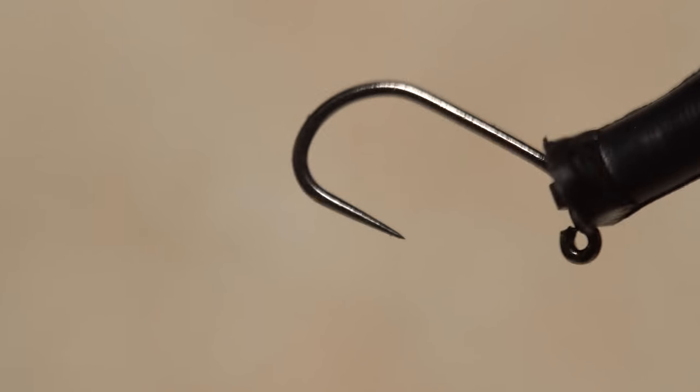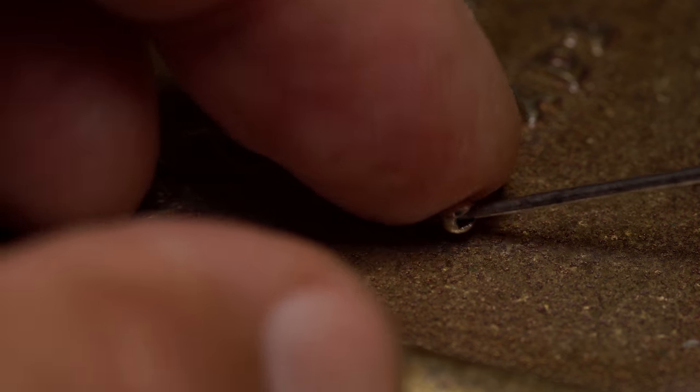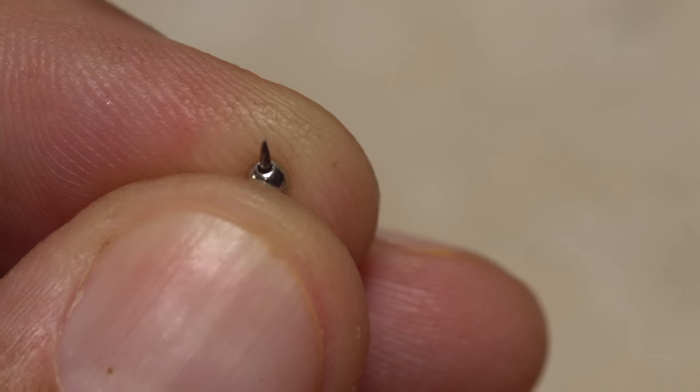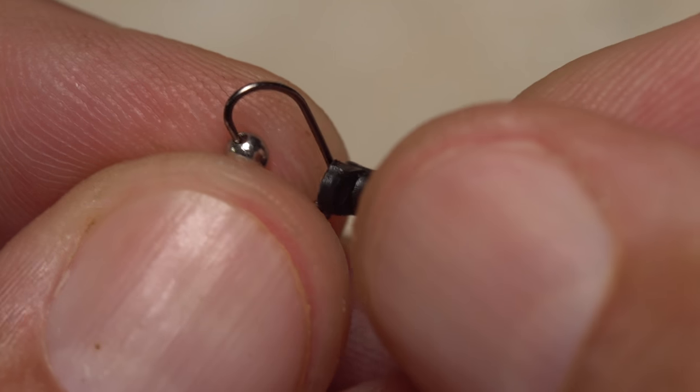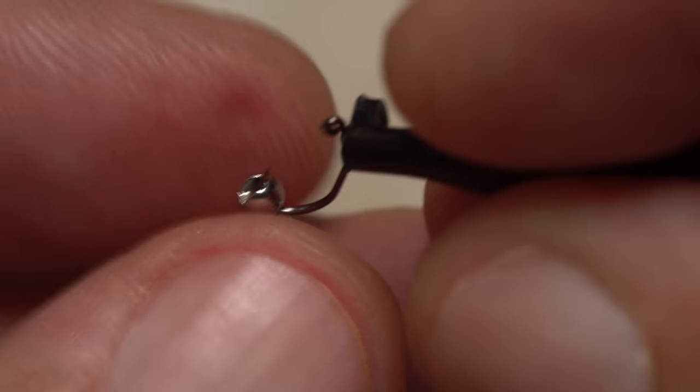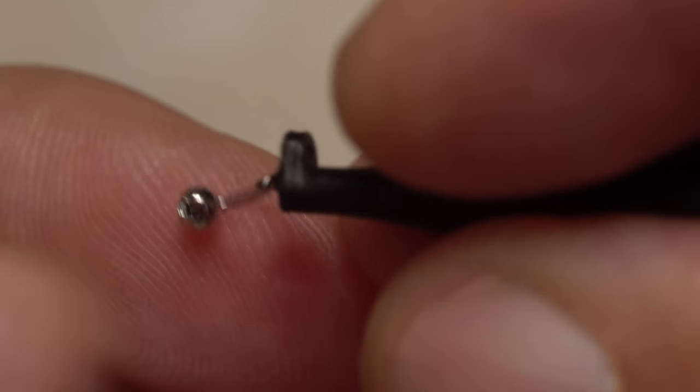Getting hold of the hook with plunger-style hackle pliers really helps. Also, picking up the bead with your bodkin and getting it oriented small hole up between your fingertips makes it much easier to thread on the hook. Sometimes you need to give the bead a little spin to get it around the bend.